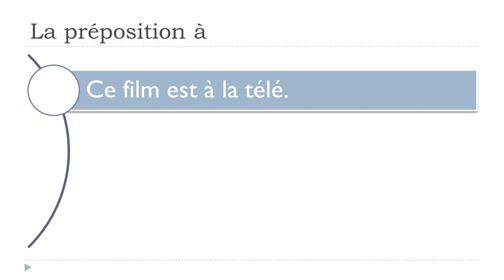Another possibility is the 'on' concept. First example: 'Ce film est à la télé' — this movie is on TV. We've got À here followed by 'la télé' — short for 'télévision'. In most cases in French we don't use the full word 'télévision', we just use 'télé'. So: 'Ce film est à la télé'.